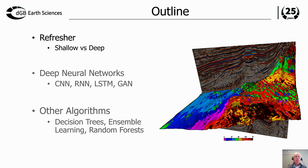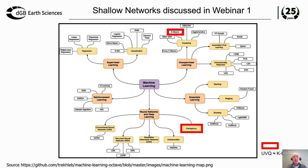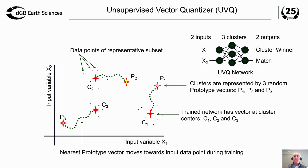I'll start by refreshing our memory on the first webinar, where I talked about shallow neural networks, before I dive into deep networks. In the previous webinar last week we talked about unsupervised factor quantizers and multi-layer perceptrons. Unsupervised factor quantizers were networks used for clustering and segmenting the data, more or less similar to k-means clustering, and also akin to Kohonen networks.